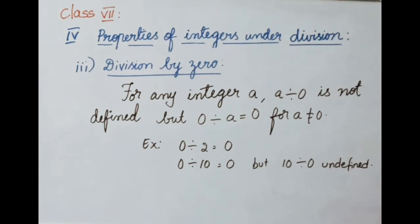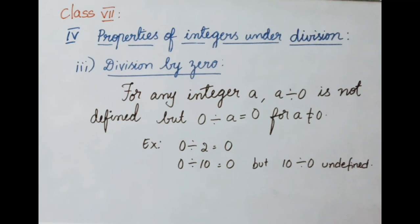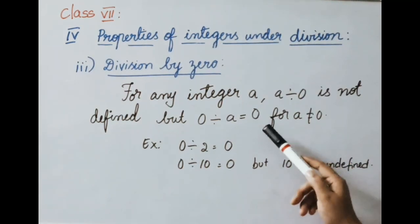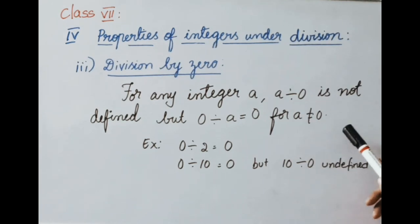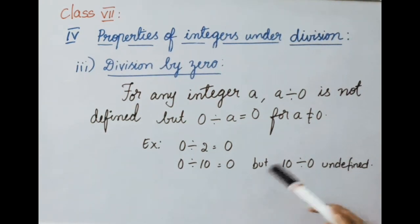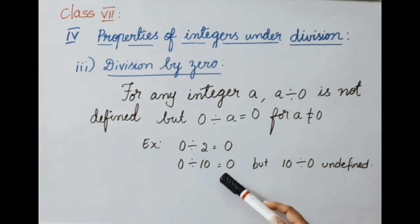Division by 0: for any integer A, A divided by 0 is not defined. But 0 divided by A equals 0, where A is not equal to 0. That means any number divided by 0 is undefined, but 0 divided by any non-zero number gives 0. Examples: 0 divided by 2 equals 0, and 0 divided by 10 equals 0.